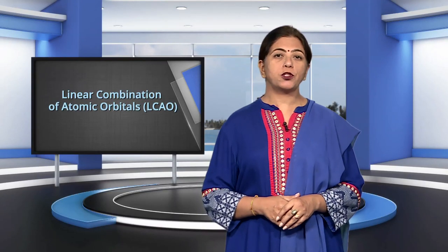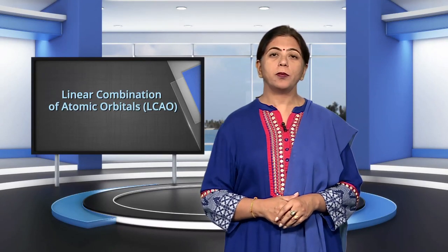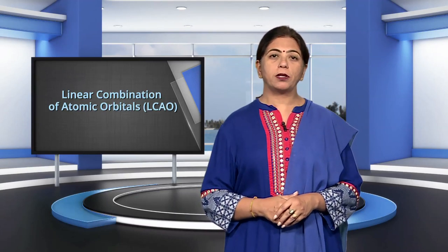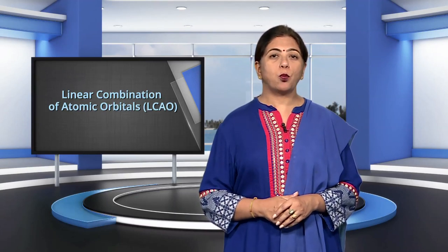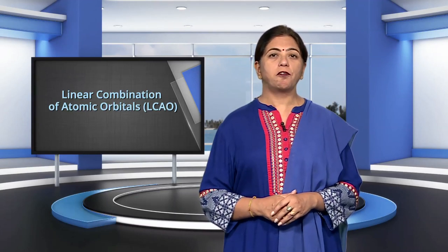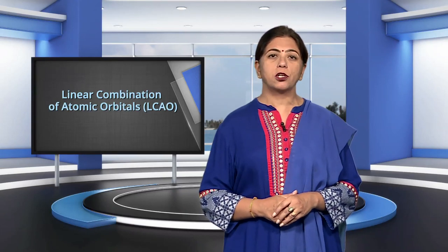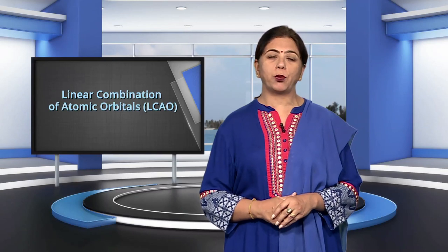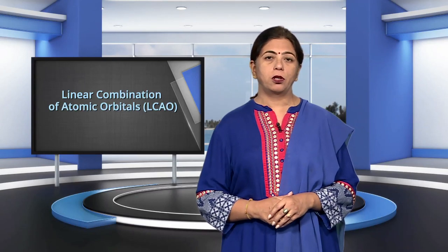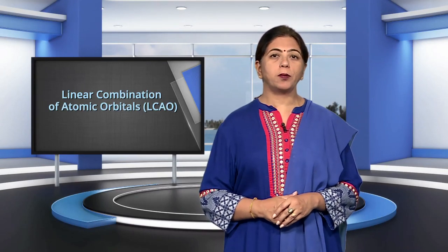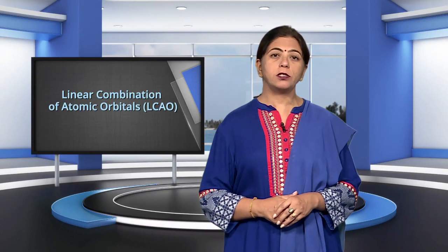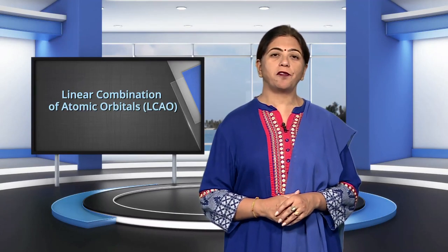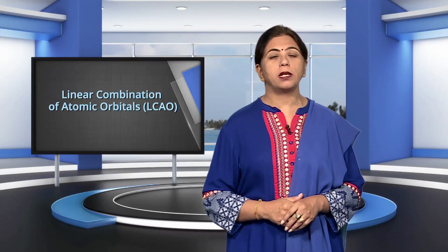Since it cannot be solved for any system containing more than one electron, molecular orbitals, which are one-electron wave functions for molecules, are difficult to obtain directly from the solution of the Schrödinger wave equation. To overcome this problem, an approximate method known as linear combination of atomic orbitals has been adopted.